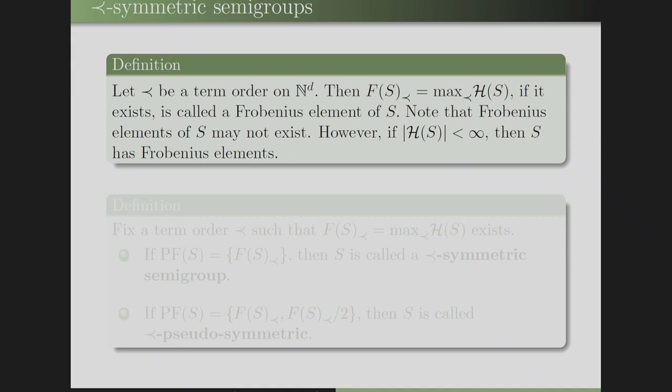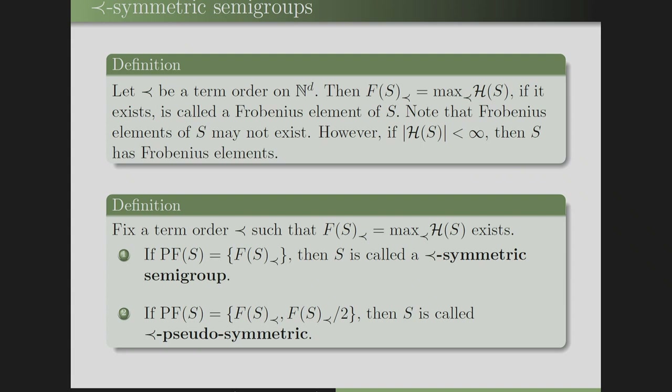We define symmetric semi-groups. Let a term order be given on N^D, and let F(S) be the maximum of H(S) with respect to this order. If it exists, it is called the Frobenius element of S. The Frobenius element may not exist, but if H(S) is finite then it always exists.